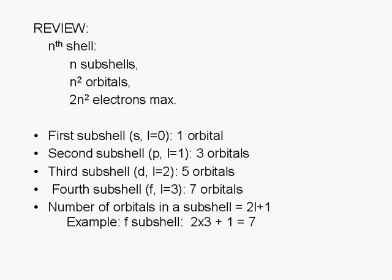Here's a review of the rules to help you with this type of question. The nth shell of an atom consists of n subshells and has n² orbitals. Since a maximum of two electrons can be assigned per orbital, the maximum number of electrons that can be assigned to the nth shell is 2n².